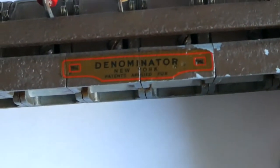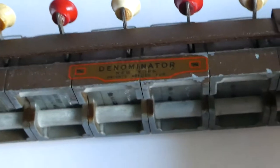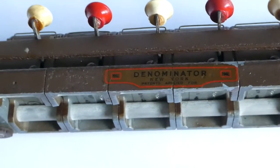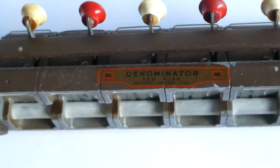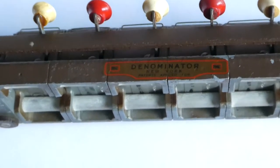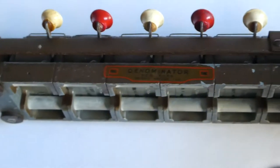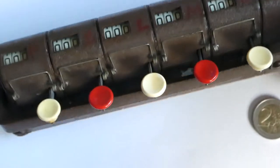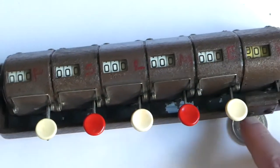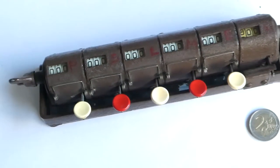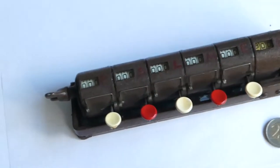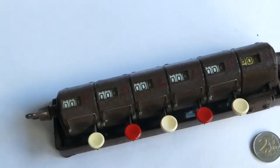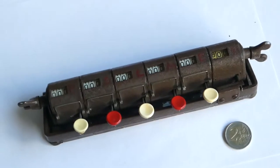This machine was made by the Denominator Company. That company was founded in New York in 1914, and the name is because their first product was a counter similar to this, but with 11 counters, one for each denomination of money, from one cent, nickels and dimes, all the way up to 20 dollar notes.